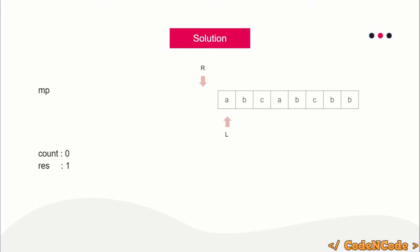We'll solve this problem using the two-pointer method. I have two pointers, L and R. R is initialized to minus one and L is initialized to zero. When R is smaller than L, the range is invalid, so we start with an invalid range. R is minus one because no matter what, R will be incremented as the first step — giving us the first valid range of zero to zero.